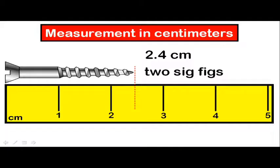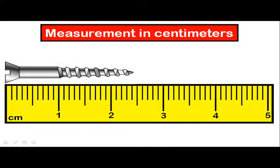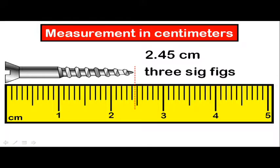Let's take a look at the same object, but measured on a more precise ruler, and see what happens to the number of sig figs. Now, this object would be measured as somewhere between 2.4 centimeters and 2.5 centimeters. So by adding the estimated digit out to the hundredth place, we might get a length of 2.45 centimeters. This measurement is more precise, and has three sig figs.